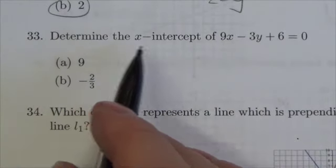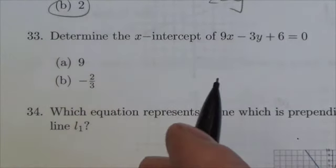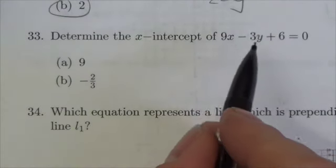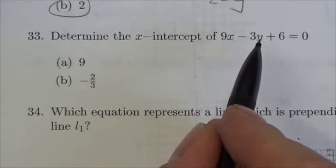Now remember the x-intercept, or where I hit the x-axis, occurs when the y-coordinate or the value of the dependent variable is zero.